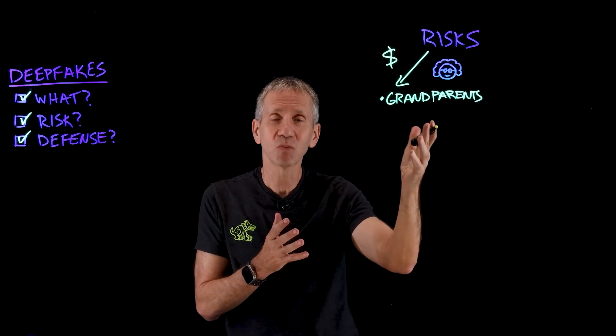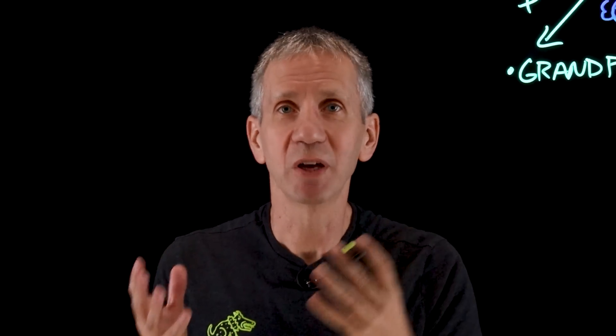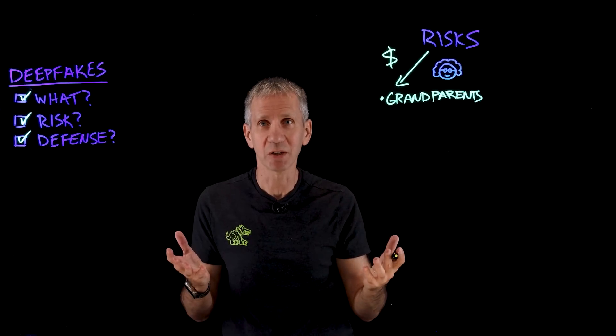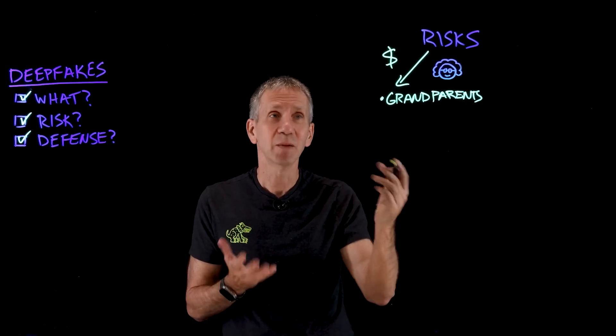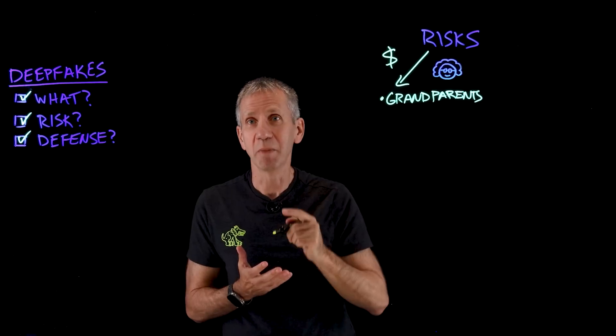The way these things work is you get a deepfake of someone's voice — let's say a grandchild — and then have them call. The deepfake makes the call and talks to the grandparent, telling them: help, I'm in trouble, I wrecked my car, I got robbed, I've been arrested — something like that — and I need you to send money, please help. What grandparent isn't going to help their grandchild? So they send money, but of course they're sending it to the bad guy.